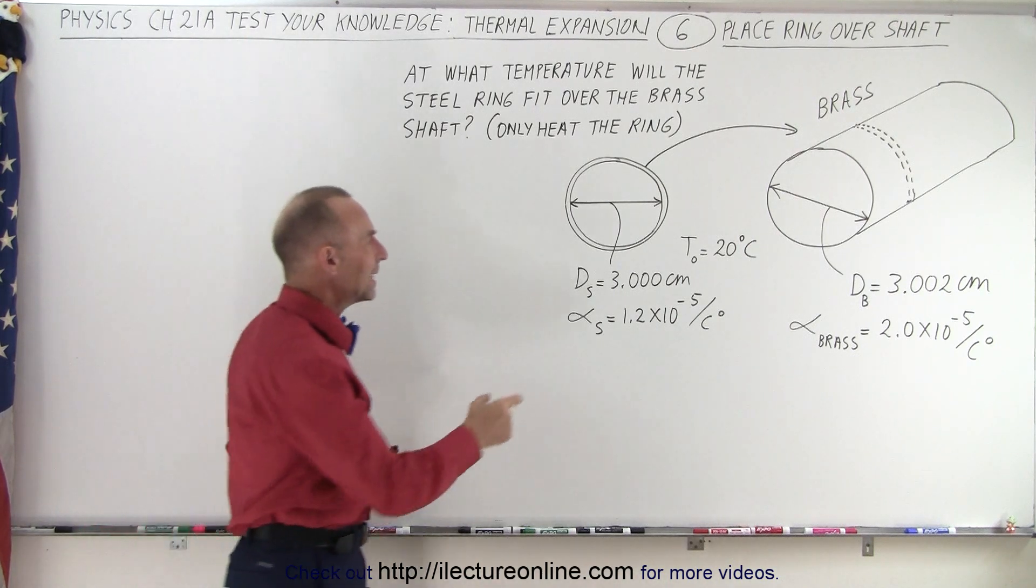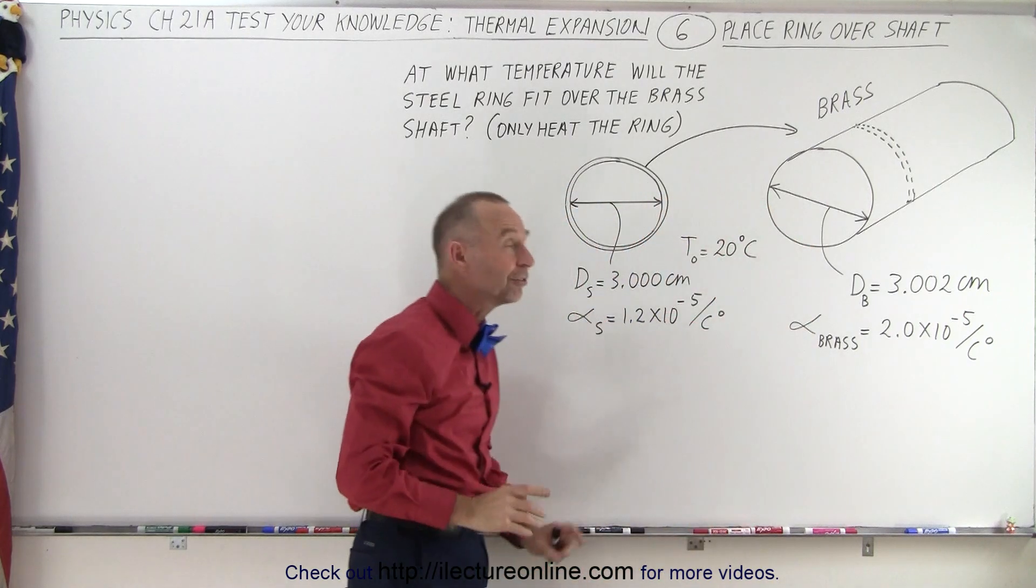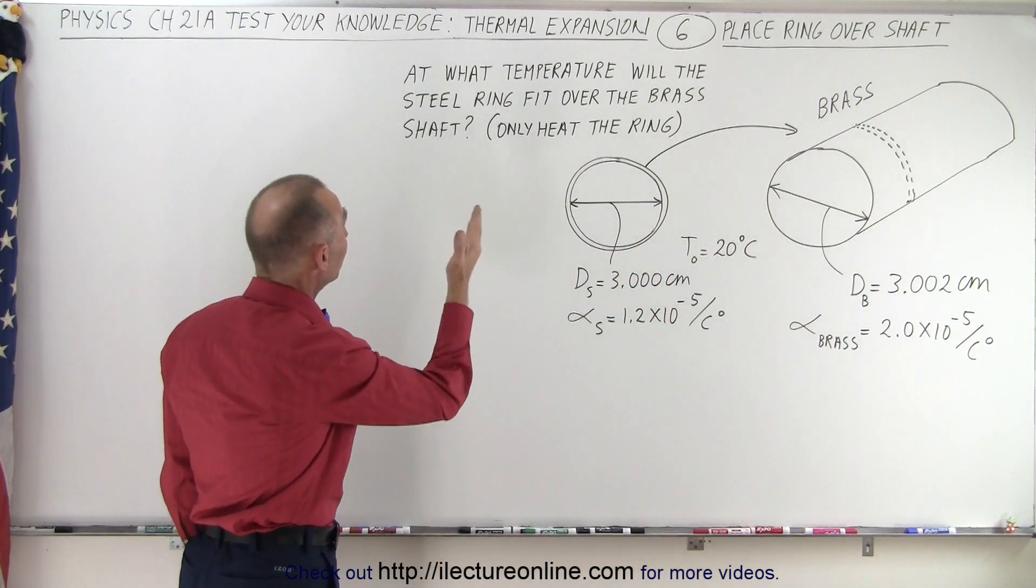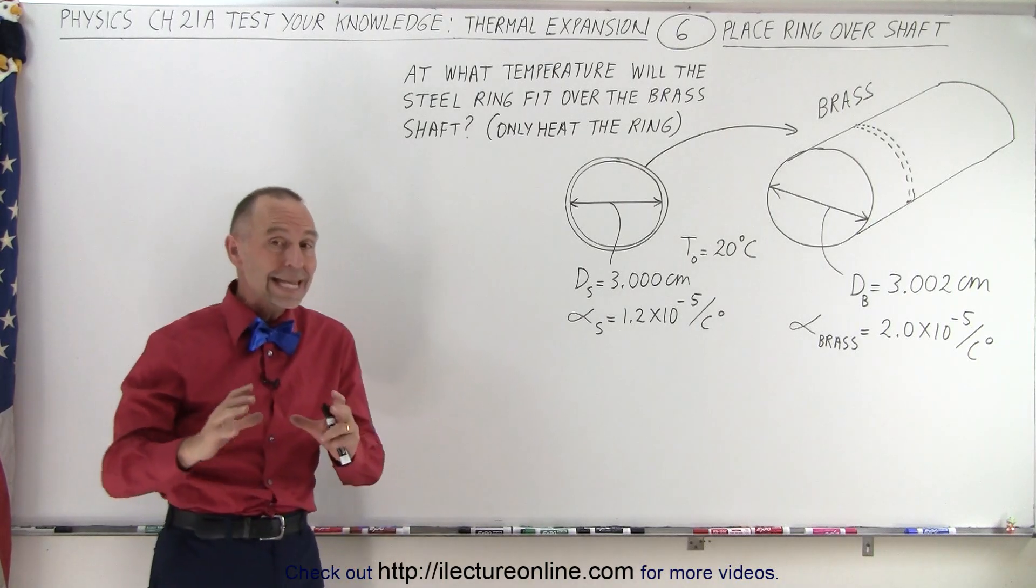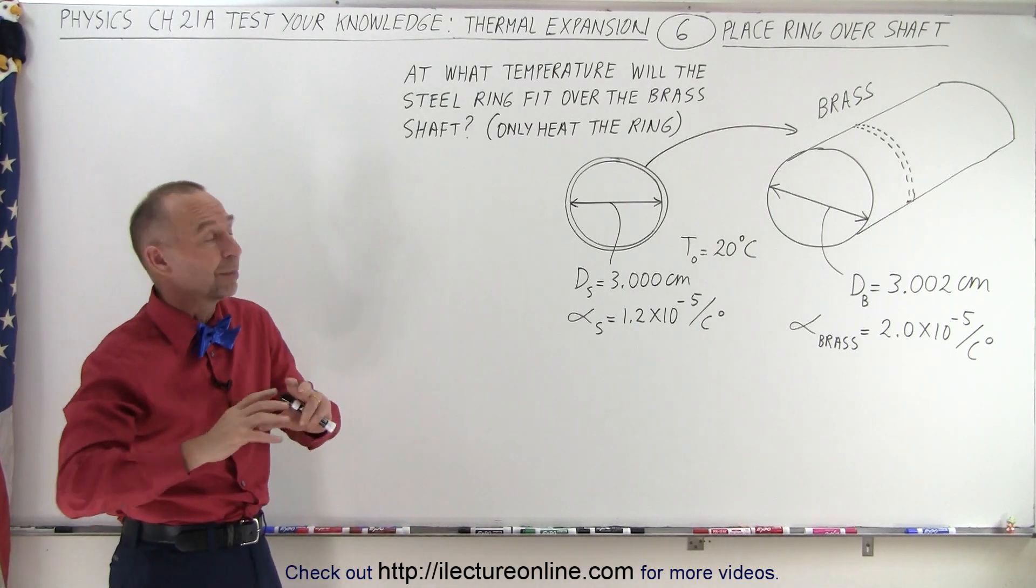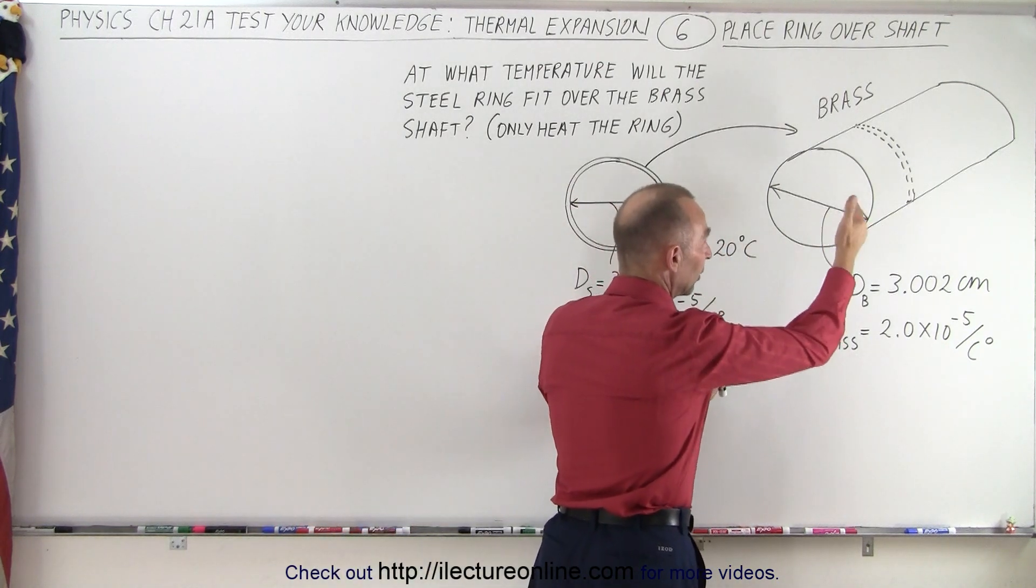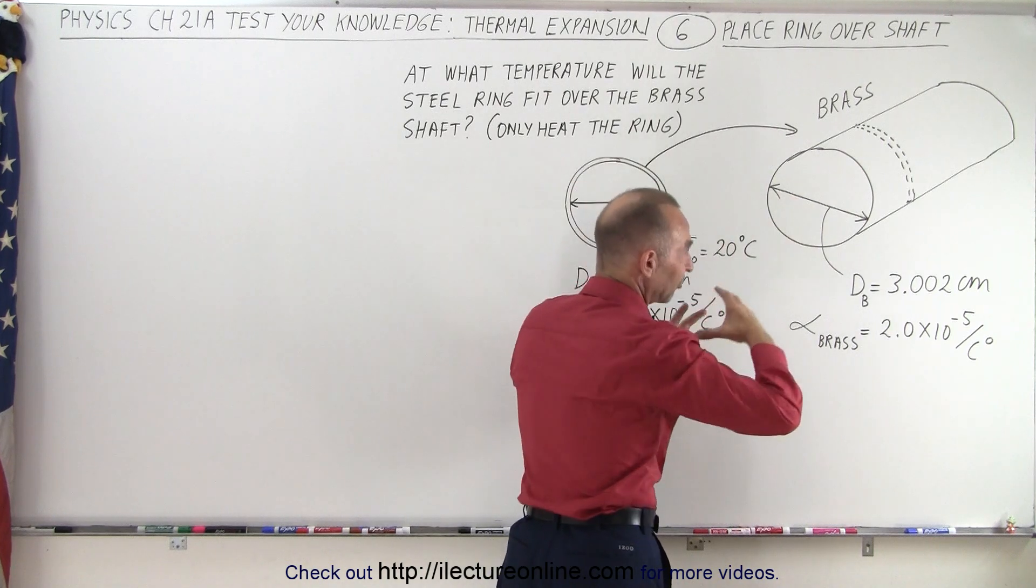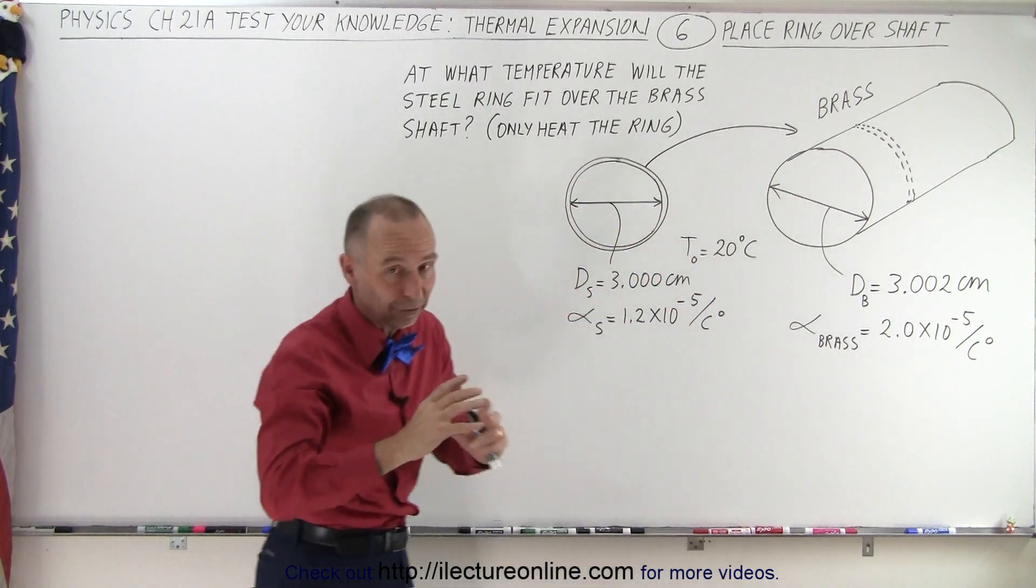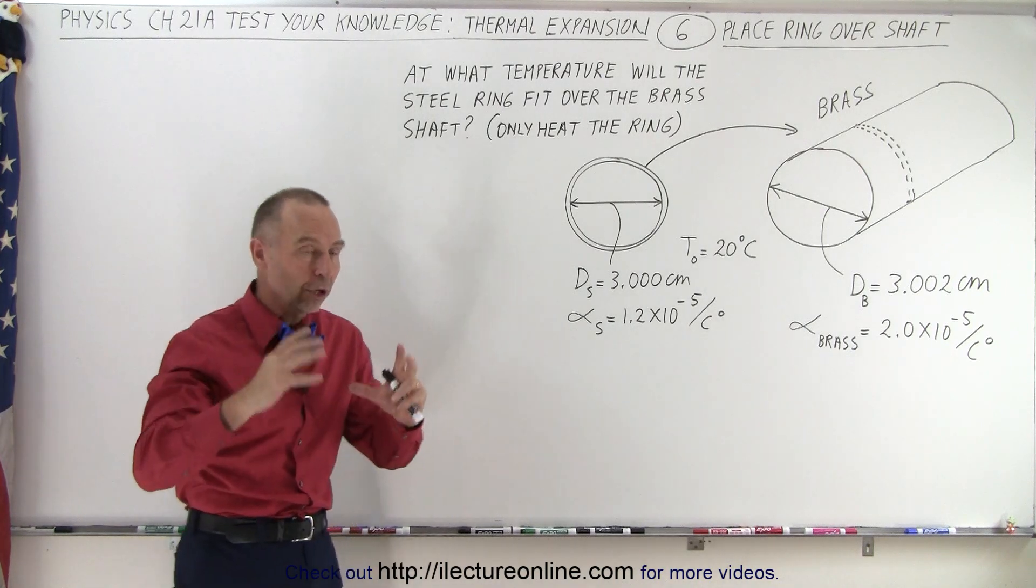So what we want to do is heat up the steel ring so that it will fit over the shaft. Now the question is, at what temperature will the steel ring fit over the brass shaft if we only heat the ring? We have to do this quickly because if we start placing the ring over the shaft and the heat from the ring goes into the shaft, the shaft will begin to expand and we won't be able to fit it over. So we want to do it quickly as soon as the ring is large enough.